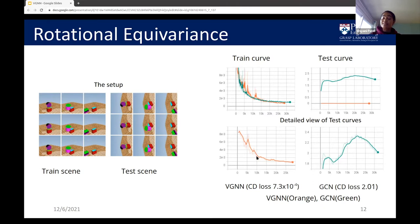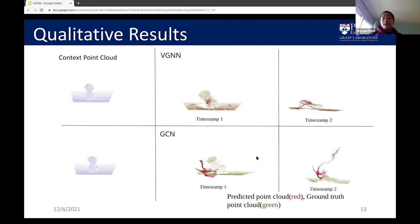This is because VGNN's property for equivalence with respect to rotation has helped it relate the upright stack with the rotated stack. This is the qualitative view and you see that the input point cloud is the blue point cloud. This is timestamp one and this is timestamp two. In both these timestamps for VGNN, the predicted point cloud, which is in red, is on top of the ground truth point cloud, the green one. Whereas for GCN, it is trying very hard to mimic that action, but is unable to. And this is all because VGNN has the ability to be equivalent with respect to rotation.